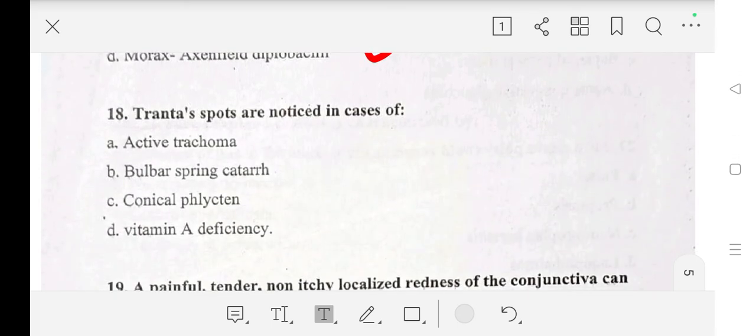Eighteenth question: Tranta spots are noticed in case of active trachoma, bulbar spring catarrh, phlyctenular conjunctivitis, or vitamin A deficiency? Answer is bulbar spring catarrh.